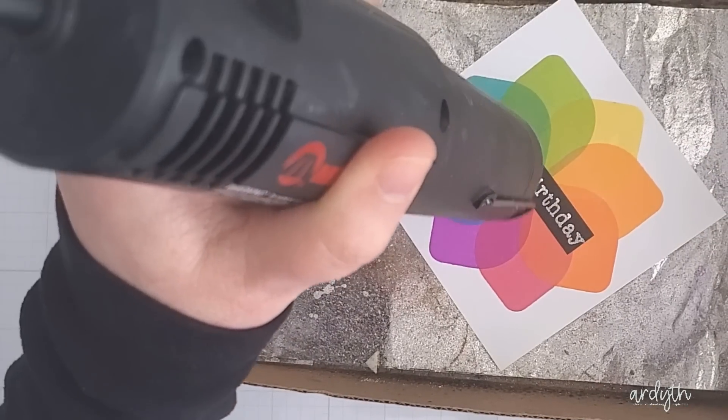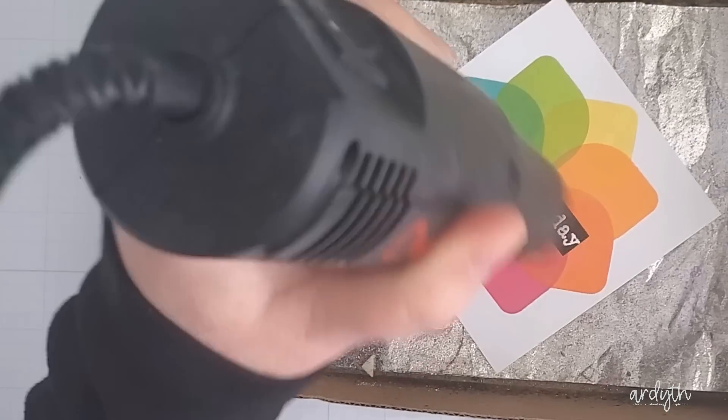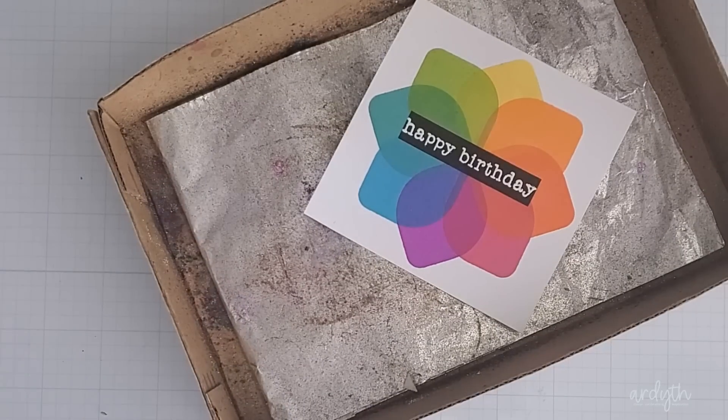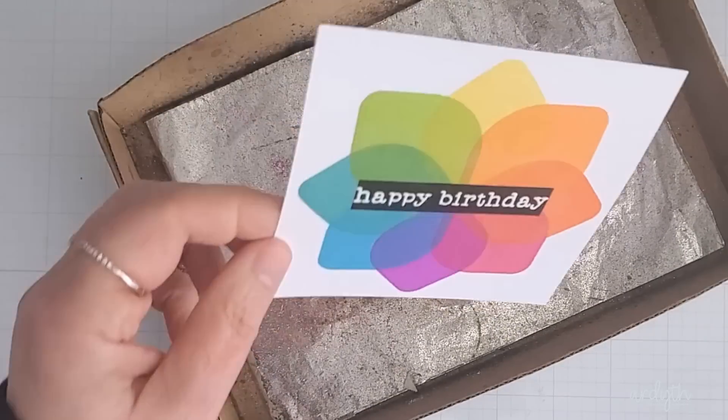Then I grab my heat gun and I heat up the powder until it melts. I put my panel into a shoebox lid that's been lined with foil. This means I'm not trying to hold onto the panel with my fingers and maybe get burned. And that foil distributes the heat on the back of the card stock to reduce warping.